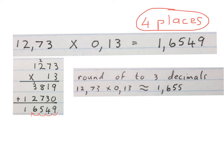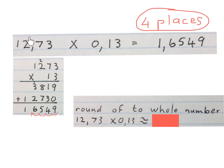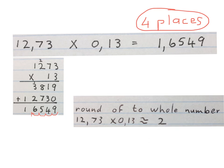Look at the video on rounding off decimals. I could also have given you this problem and asked you to round it off to a whole number. Still write the sum down and put the round-off sign down. Whole numbers are 0, 1, 2, 3. So you go to this number and check if you're going to leave it as a 1 or make it a 2. This 6 next door will make it bigger, so this multiplication sum rounded off to a whole number gives you a final answer of 2.